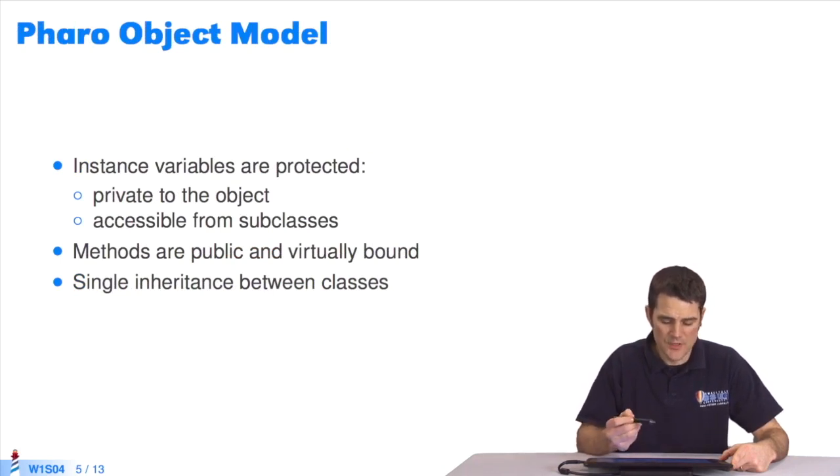The Pharo object model is as follows: Instance variables are protected. All objects have instance variables and they're protected. They're private to the object or are accessible from subclasses. The methods are public and virtually bound. All the methods are public in Pharo. And Pharo accepts single inheritance between classes. A class can only have one superclass.